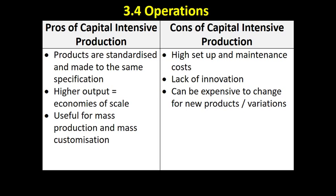The benefits of capital intensive production: if machines are making it, the process can be standardised and products are made consistently at the same standard, which is helpful for mass-produced goods. They will be made at a higher output, which can lead to economies of scale — we can bulk buy materials because production occurs at a very fast rate. It's also useful for mass production, also known as flow production, where products are produced continually on a production line, as opposed to labour intensive job production where each product is a one-off.